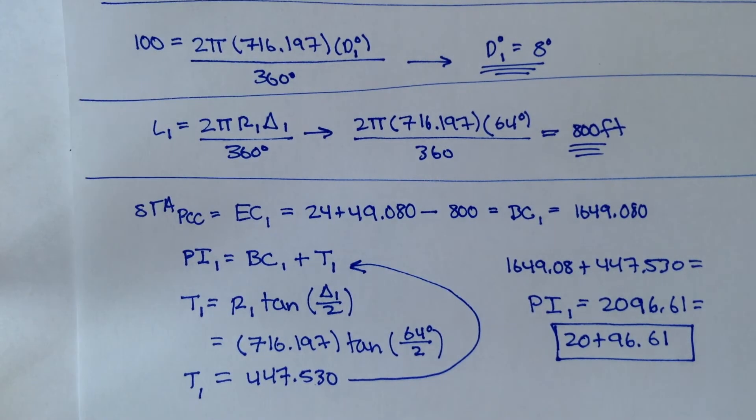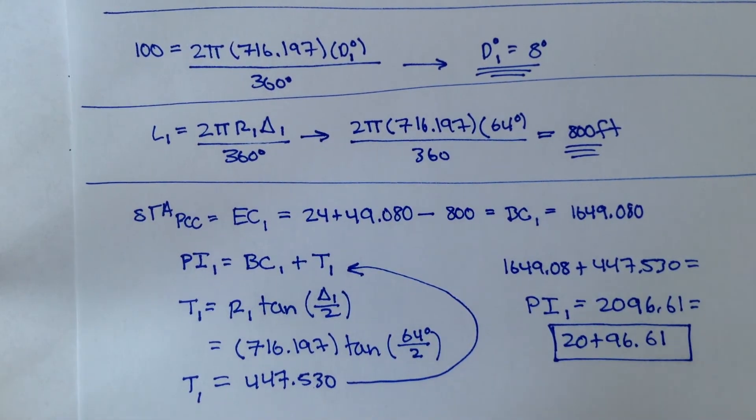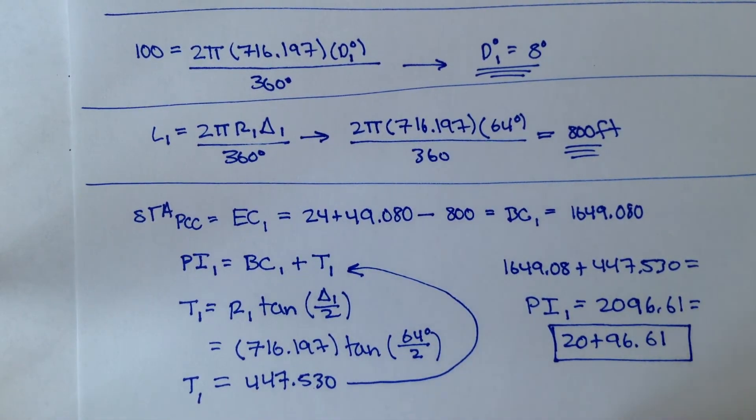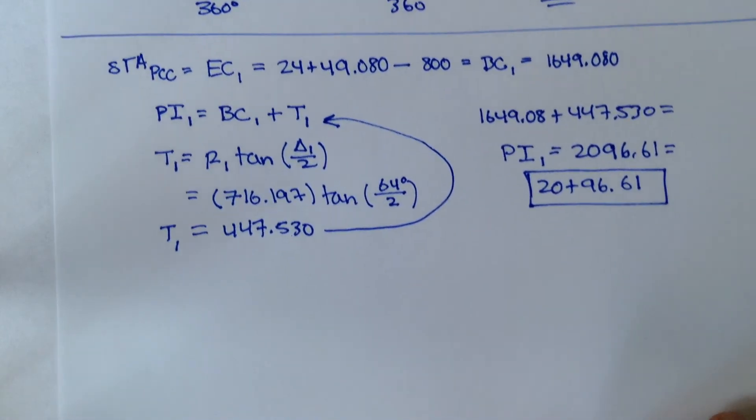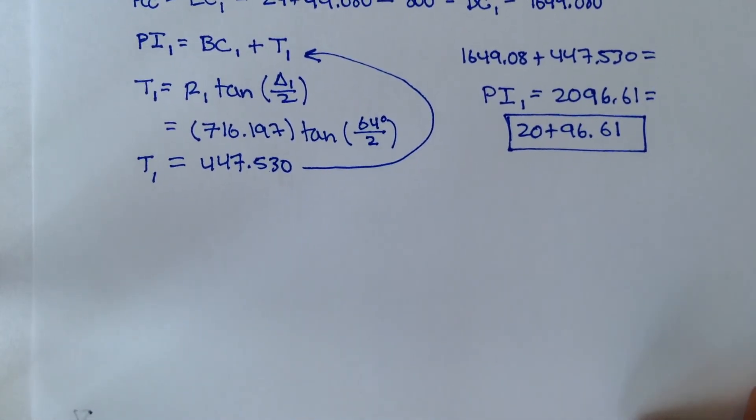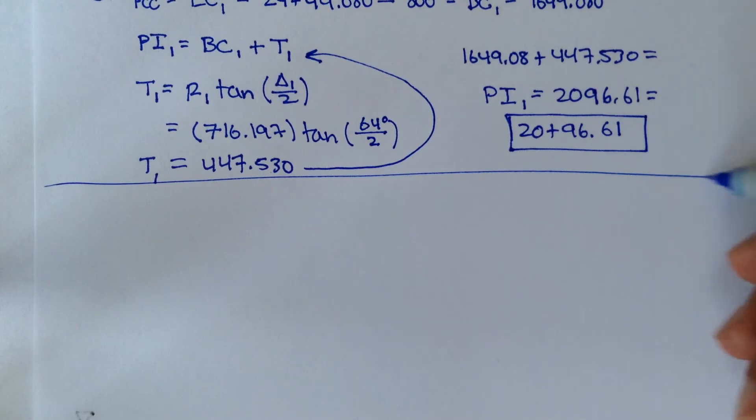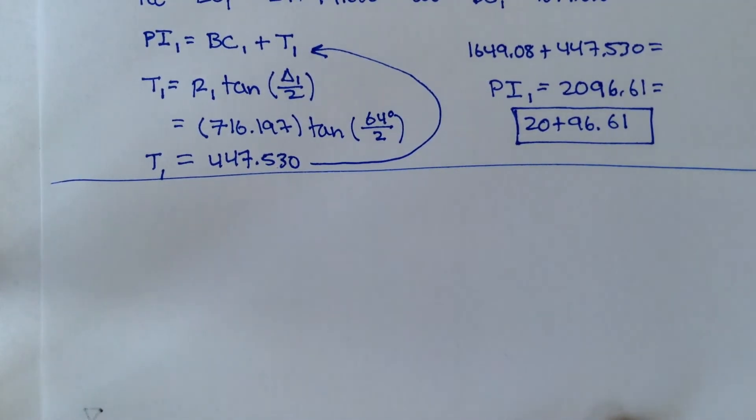The last two things we need to solve for are the middle ordinate for curve 2 and the external distance for curve 1. So let's do a middle ordinate for curve 2 first. Let me draw a line here.